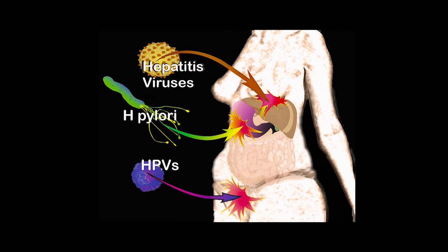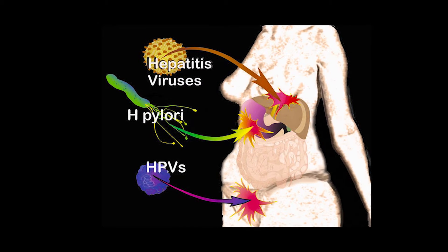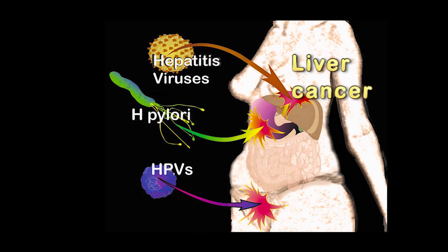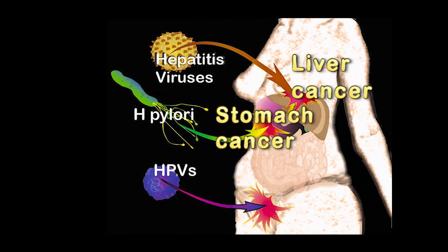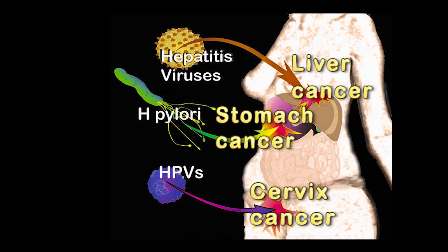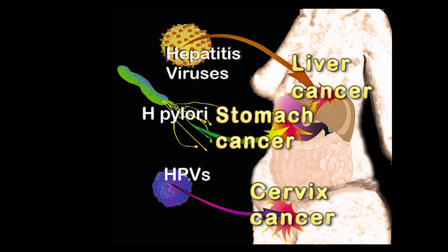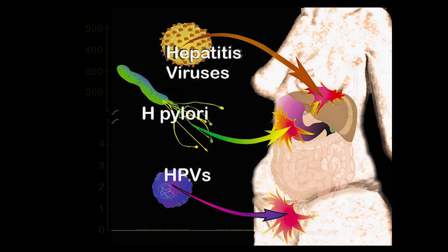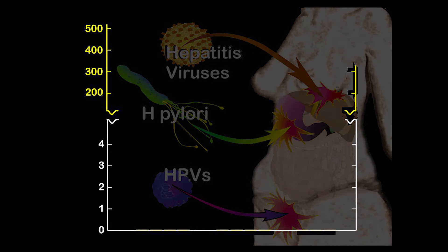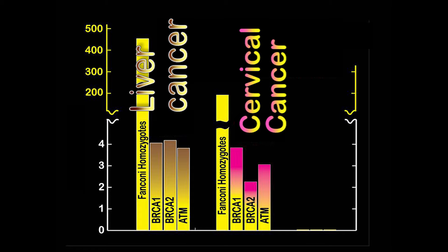There are viruses and other infections that are involved in causing a few known cancers. Hepatitis viruses cause liver cancer, the bacterium H. pylori causes stomach cancer, and human papillomaviruses cause cervical cancer. When the cancer risks largely attributed to these infections were compared in mutation carriers to risks in normal individuals, risks in mutation carriers were much greater.